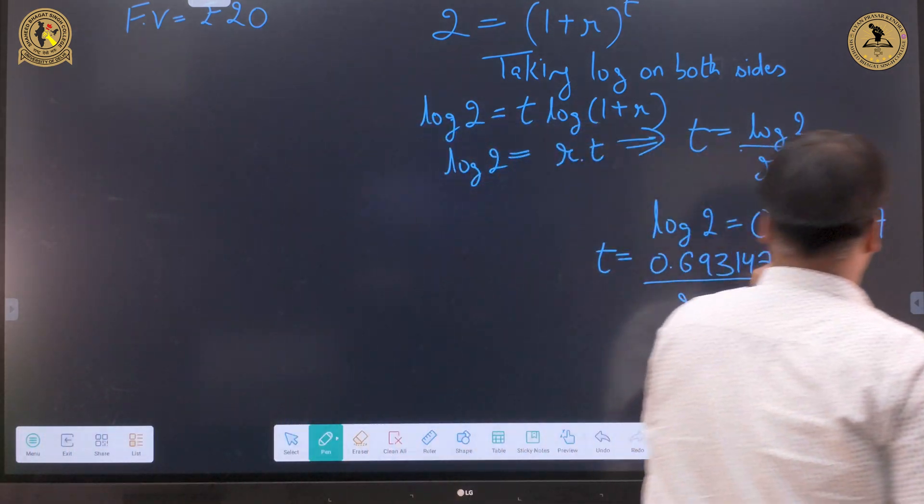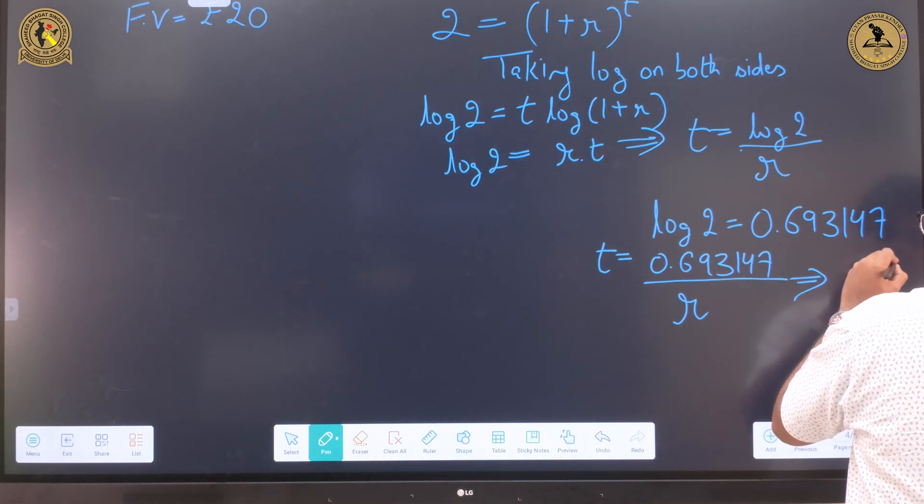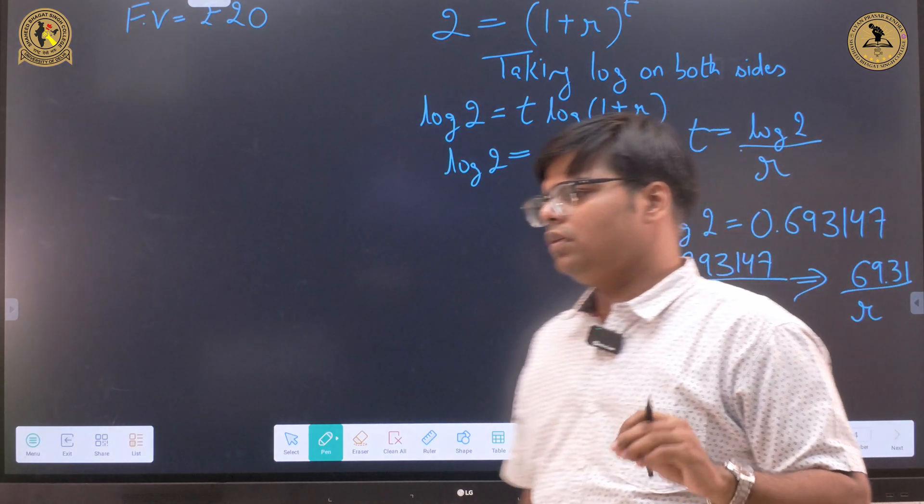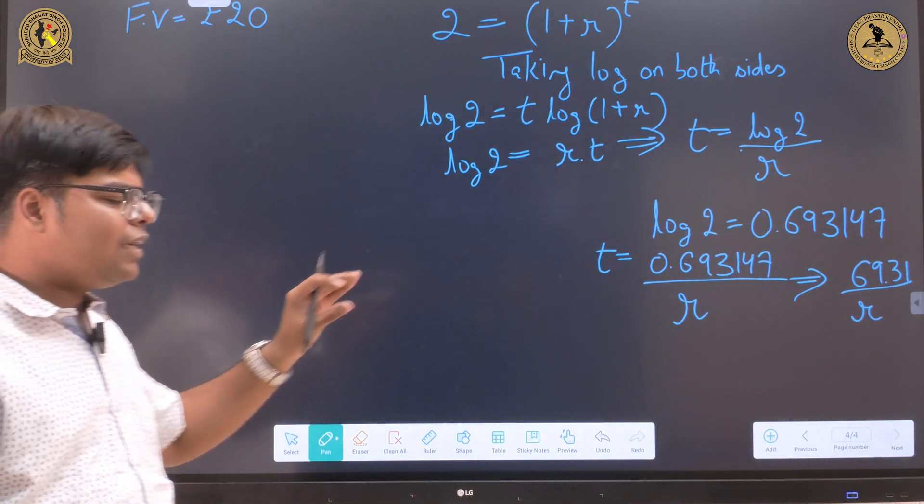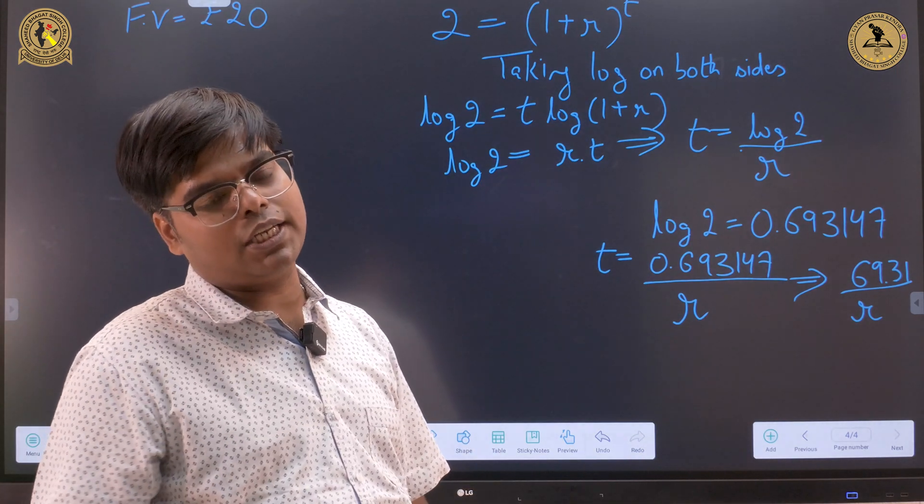Now you can convert it into the integer form, which is 69.31 divided by r. Now one of the prominent questions which may strike in your mind: why we are using this 72 figure, why not we use 69.31?